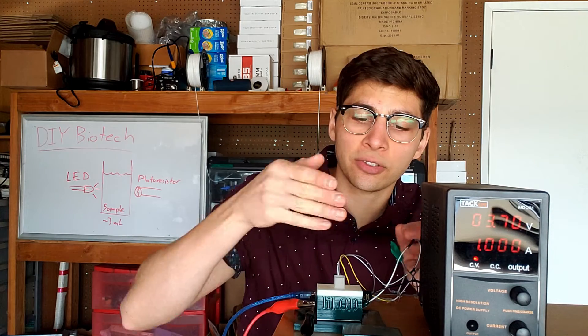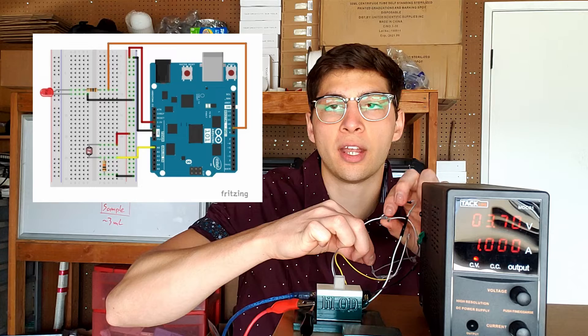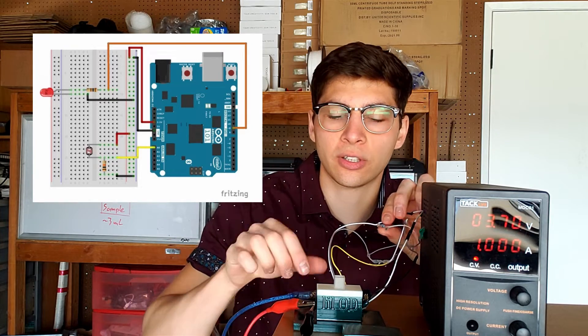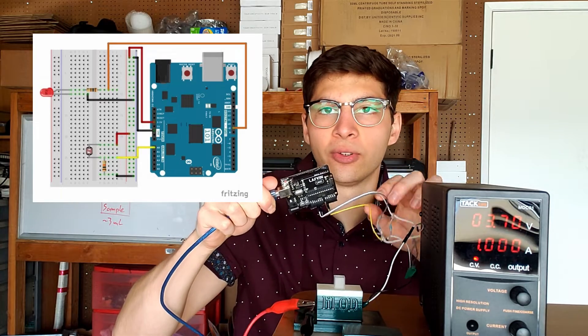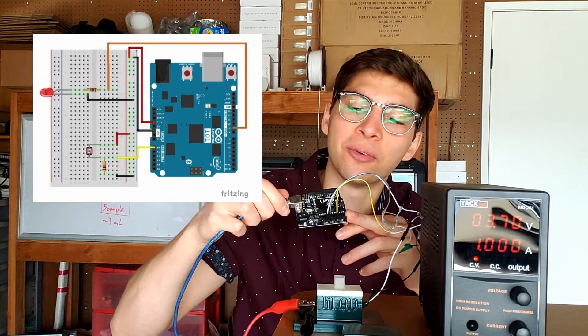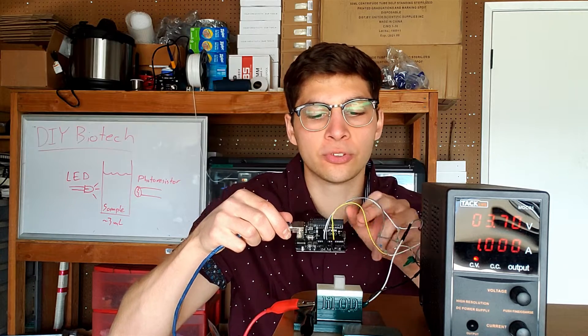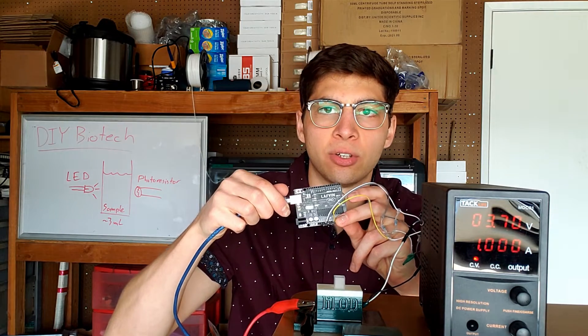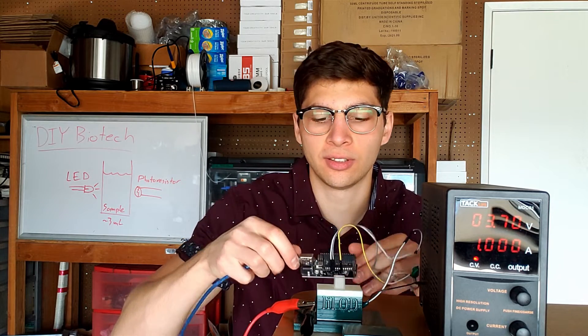On the detector side of things, we have this photo resistor with a pull-up resistor. The pull-up resistor is important. You can look up these circuits online. And then that is connected to a knock-off Arduino Uno. I have the pull-up resistor plugged into the A0 of the Arduino, and then it's being powered by ground and VCC.